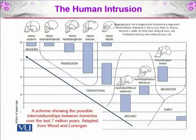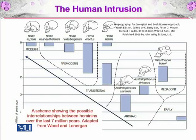Here you can see a scheme showing the possible interrelationships between hominids over seven million years, adapted from Wood and Lonergan. The early group are the Megadonts; there are the archaic hominins; the transitional which includes Homo habilis; then the pre-modern which includes Homo erectus, Homo heidelbergensis, and Homo neanderthalensis; and finally Homo sapiens. These are categorized as early Megadont, archaic, transitional, pre-modern, and modern human.